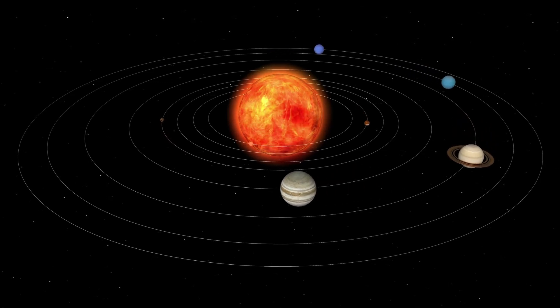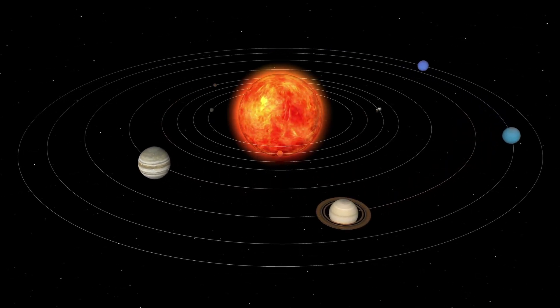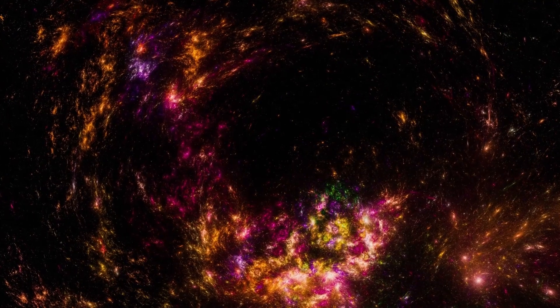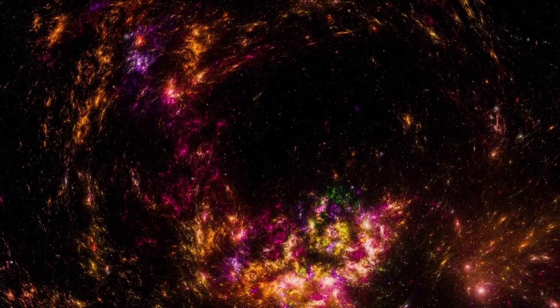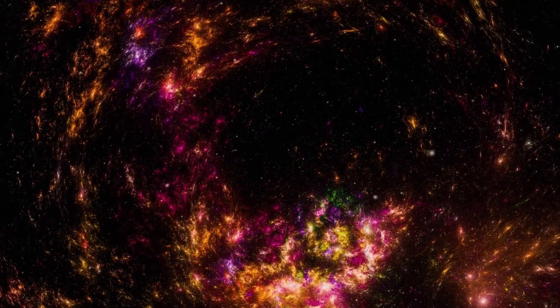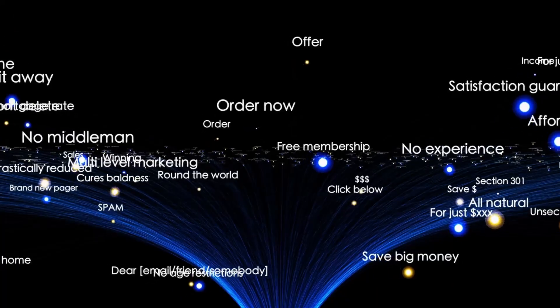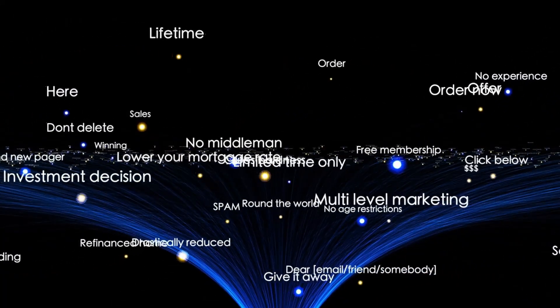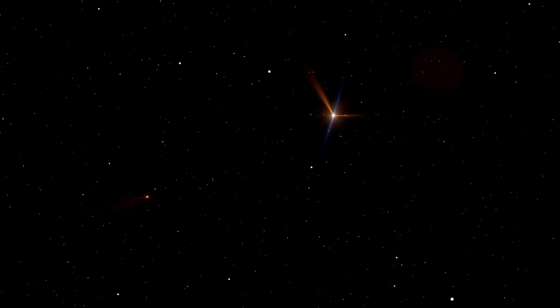Super string theory proposes that subatomic particles are tiny, vibrating strings, and the universe itself is a symphony of these vibrations. It unites Einstein's gravity with quantum theory and predicts exotic phenomena like black holes and wormholes. But here's the twist: super string theory requires 10 dimensions of space-time, not the four we experience.